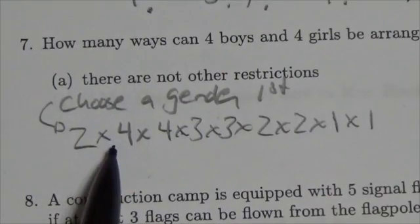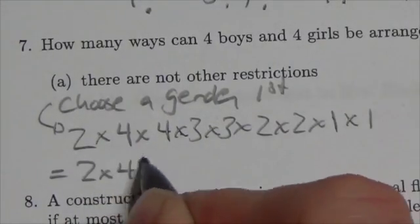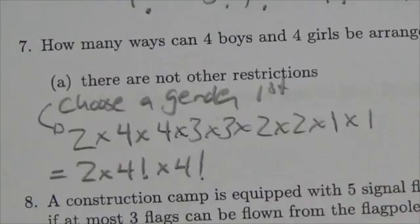So it's basically at this point here just a matter of placing the individuals there. And this is the same as two times four factorial times four factorial.